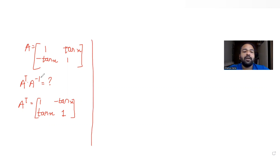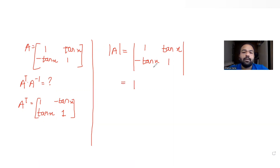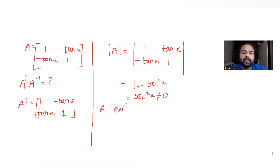Now let's find A inverse. First, let's check whether A inverse exists. A inverse will always exist if the determinant of A is a non-zero number. The determinant of A is 1·1 - (tan x)·(-tan x) = 1 + tan²x = sec²x, which is not equal to zero. So A inverse exists.